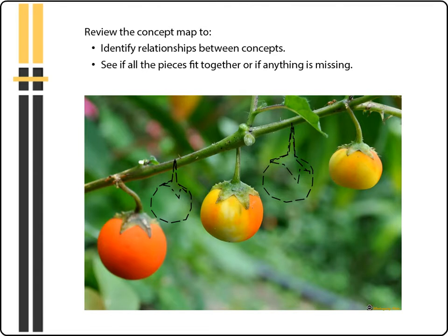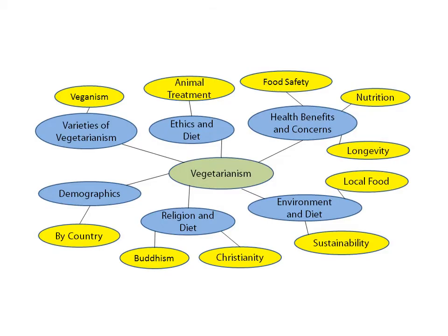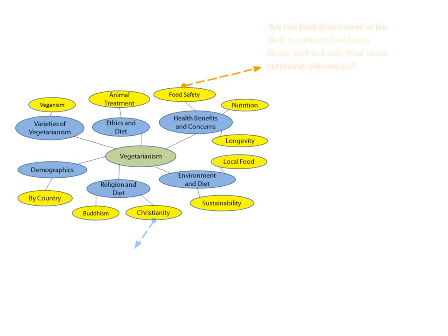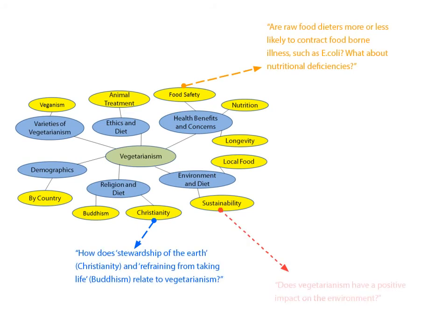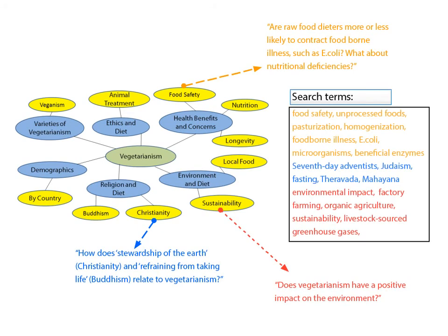Using the concept map to find information. Review the concept map to identify relationships between concepts, and to see if all the pieces fit together, or if anything is missing. Now completed, consider the concept map's many connections. Each is a dynamic relationship that may change according to point of view, current events, and many other variables. Exploring these relationships, and what dependencies there are between each, is a good way to generate a list of research questions for our topic, and to identify keywords and synonyms useful for our research.